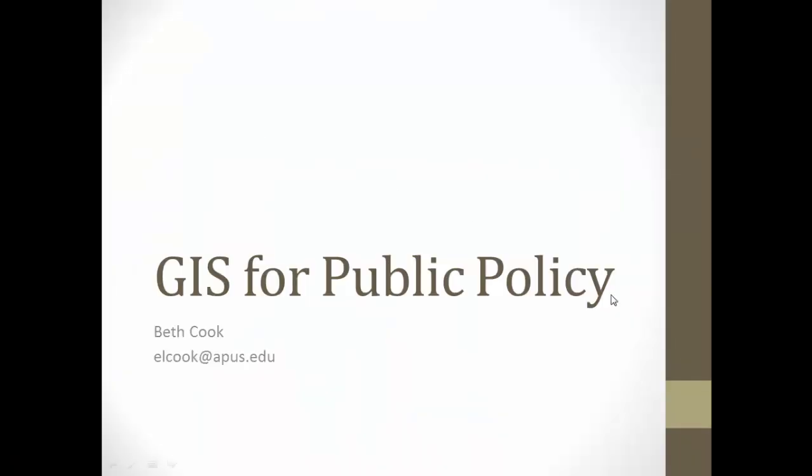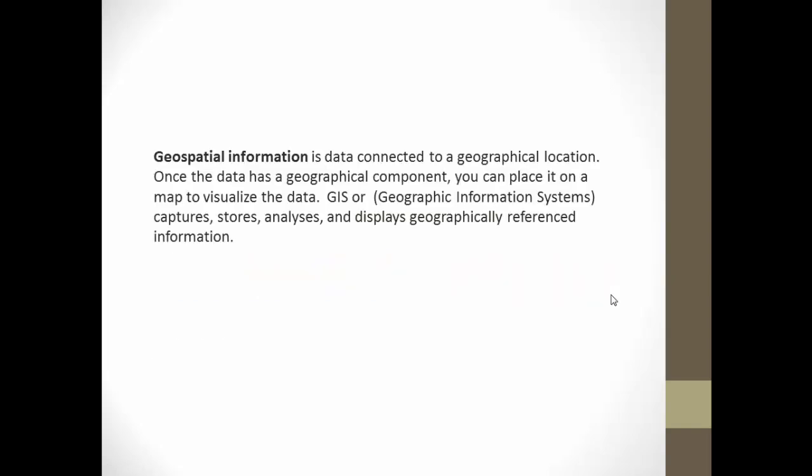Hi everyone. Today's topic is GIS for Public Policy. Geospatial information is data connected to a geographical location. Once the data has a geographical component, you can place it on a map to visualize the data. GIS, or Geographical Information Systems, captures, stores, analyzes, and displays geographically referenced information.